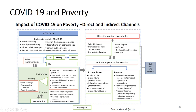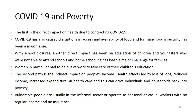We can look at the direct and indirect channels. The first channel goes through health; the second path is through people's income, whether it's job loss or reduced income. The vulnerable people are most affected — those in the informal sector, working part-time, without stable income, or who are casual or seasonal workers without insurance. They are more vulnerable.